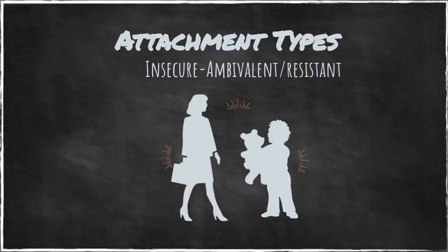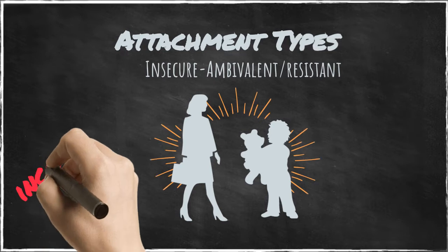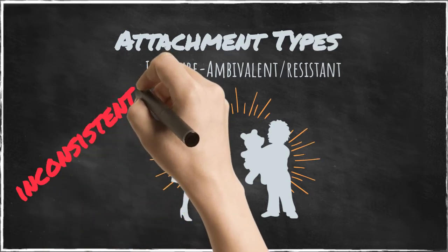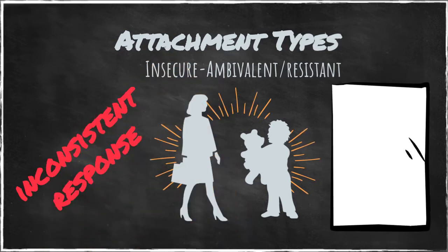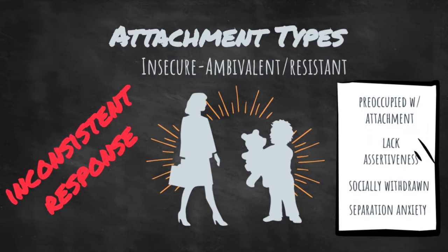Babies with ambivalent resistant attachment have mothers who are inconsistent in responding to their child's distress. These children are preoccupied with their attachment at the expense of exploration and learning. They lack assertiveness, are socially withdrawn, and have delayed mastery of separation anxiety.